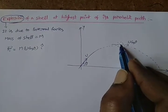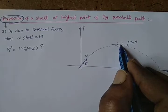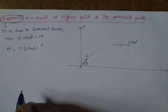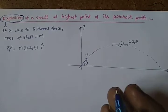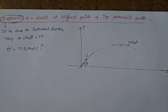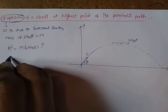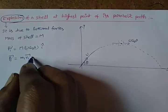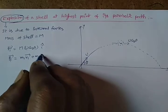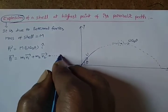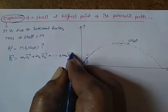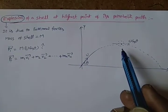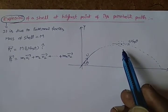At this highest point, the projectile splits into different fragments of masses M1, M2 and so on Mn. Suppose their velocities are vector V1, V2 and so on Vn. Then the final momentum of the system is given by M1V1 plus M2V2 plus and so on plus MnVn. Here there is no external force, therefore linear momentum is conserved.